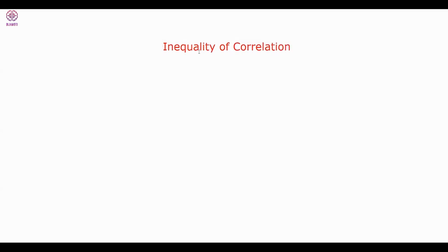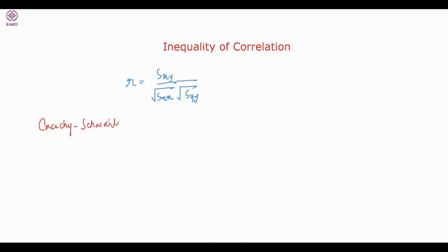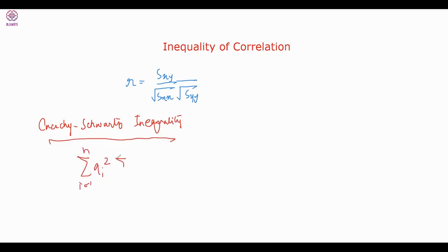So r equals SXY / (√SXX · √SYY). Now let's apply the Cauchy-Schwarz inequality, which states: [Σaᵢbᵢ]² ≤ (Σaᵢ²)(Σbᵢ²), for real numbers aᵢ and bᵢ, for i from 1 to n.